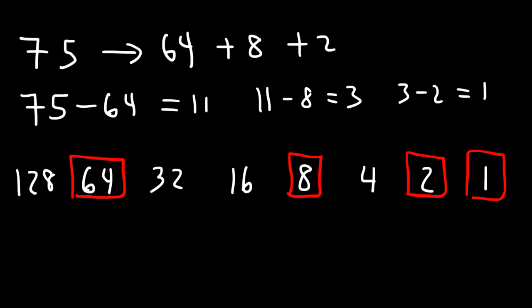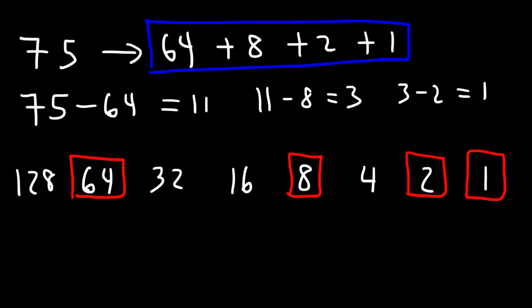And we could stop here. Because if you add these numbers — 64 plus 8, that's 72; 72 plus 2 is 74; 74 plus 1 is 75 — these four numbers add up to 75. Now once you have that, you can begin to write the numbers in binary.